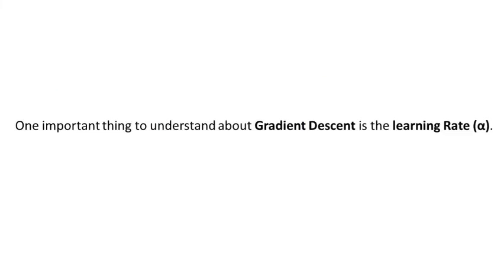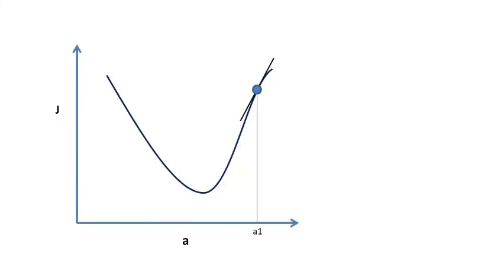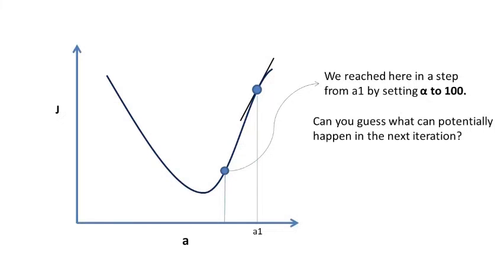One important thing to understand about gradient descent is the learning rate alpha. We know that step taken towards the minima was alpha times f dash a1. So as we increase learning rate, we will take larger step towards minimum, and hence we will reach minimum early. This will make our algorithm fast, right? Let's suppose we set alpha to 100, and we reach here in a step from a1. By setting alpha to 100, can you guess what can potentially happen in the next iteration?